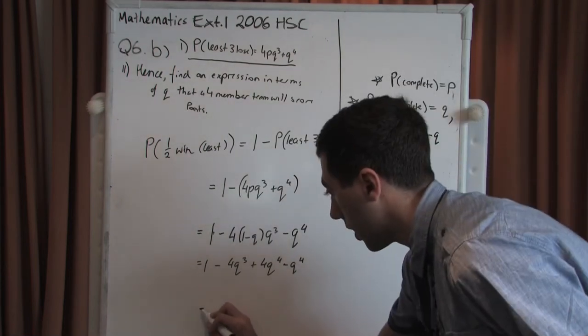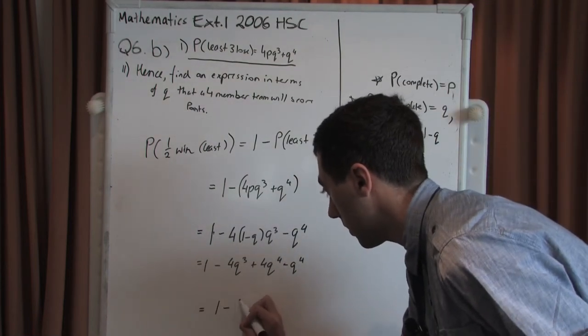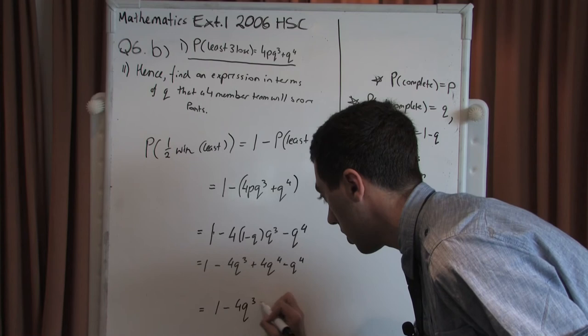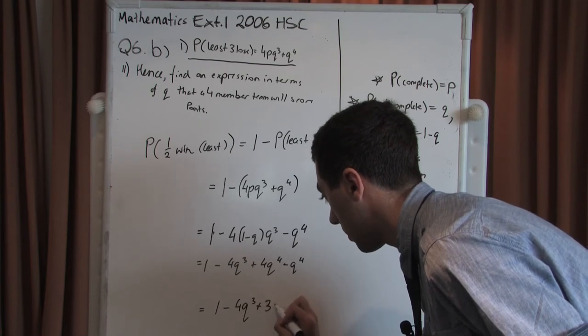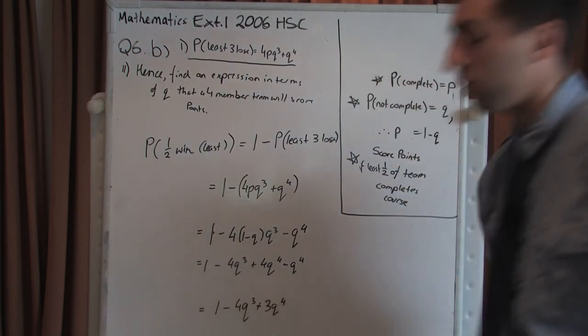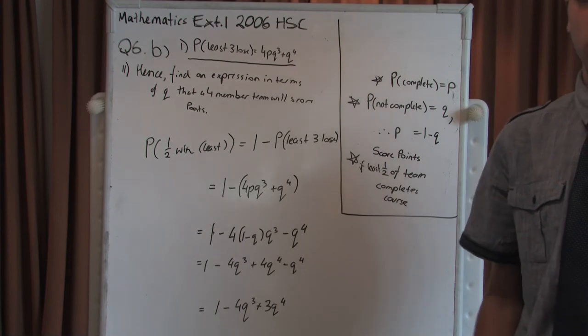Our final answer should be 1 minus 4Q³ plus 3Q to the power of 4, and that is your probability for a four team member to win points.